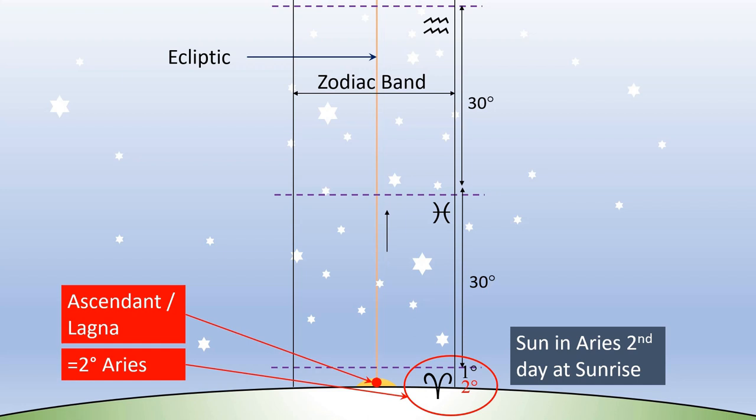I have shown you conceptually how lagna or ascendant is established. I hope you now have a better understanding of how ascendant or lagna is decided for a person born on any given day, at a particular time and a particular place on Earth. Thank you for watching.